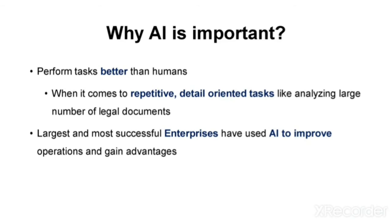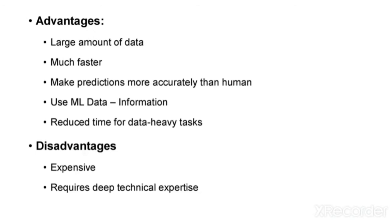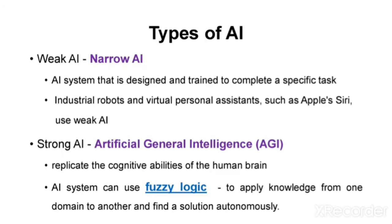Why is AI so important? Because it performs tasks better than humans when it comes to repetitive and detail-oriented tasks. The largest and most successful enterprises have used AI to improve operations and gain advantages. Advantages include handling large amounts of data much faster, making predictions, using ML to convert data to information, and reducing time. The disadvantage is that it is more expensive and requires deep technical knowledge.